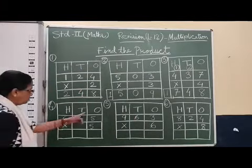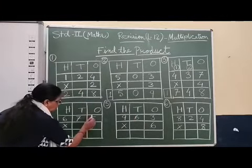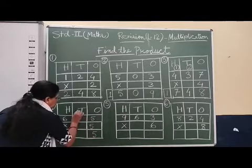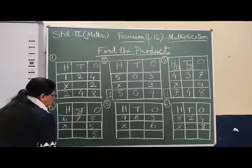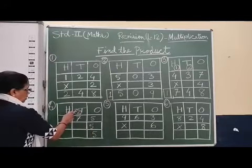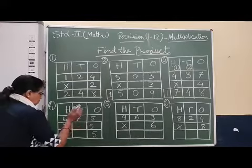Take next one. Once again we will start. Five times five, twenty-five. We will write five here, two will go up. Ten's place, five times seven, thirty-five. Thirty-five plus two, thirty-seven.